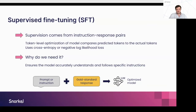With supervised fine-tuning, the supervision signal comes directly from the instruction-response pairs. We put the prompt into the LLM, look at the first token it predicts, and compare that to the actual token in the gold-standard response — optimizing token by token. The goal is for the model to accurately understand the relationship between instruction and response, and to follow specific instructions. Through generalization, we hope it can address tasks or problems beyond its supervised fine-tuning dataset.